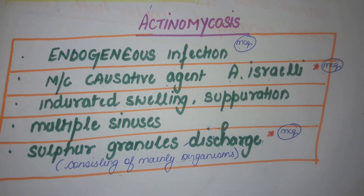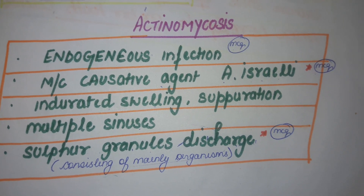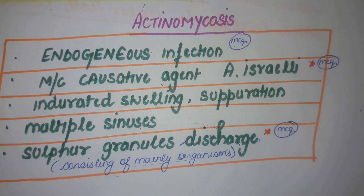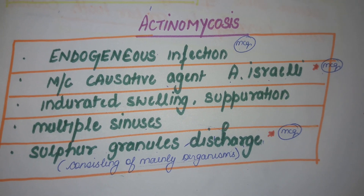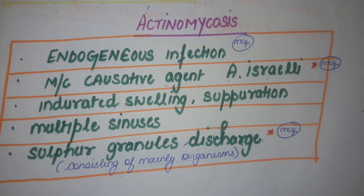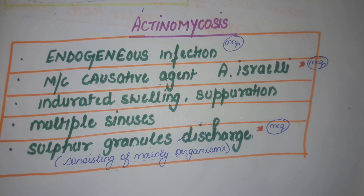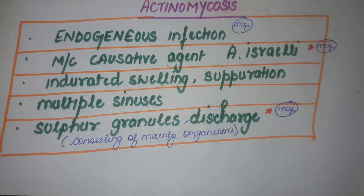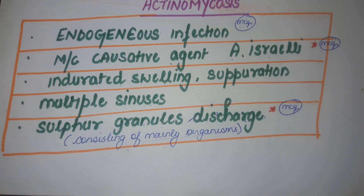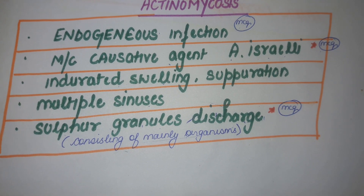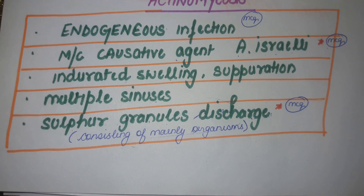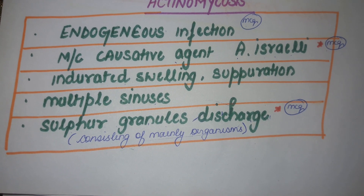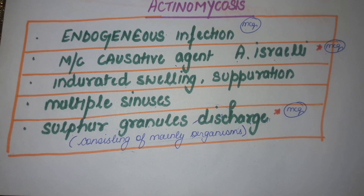Mark this point. The most causative agent is Ectanomyces Israeli — that is the main causative agent causing Ectanomycoses in humans. Very important point, mark it down. It leads to induration, swelling, suppuration, multiple sinuses, and characteristic sulfur granule discharge.